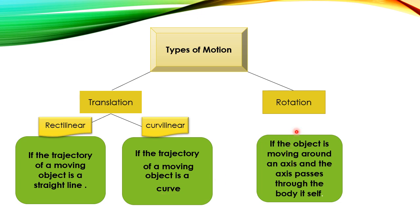The second kind is rotational motion: if the object is moving around an axis and that axis passes through the body itself, we say this motion is rotational motion.